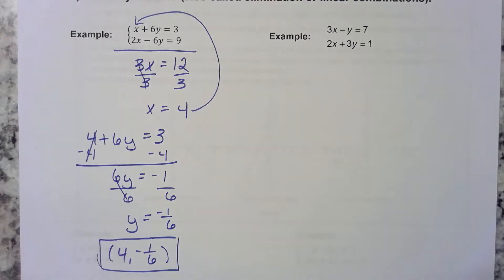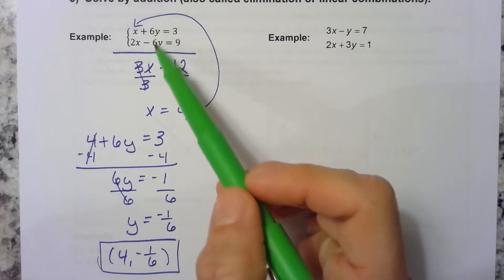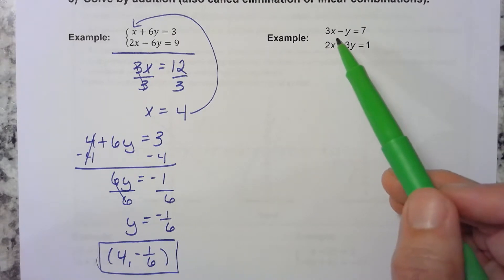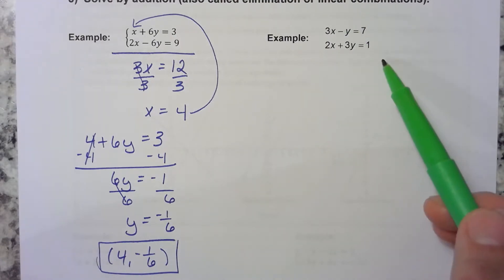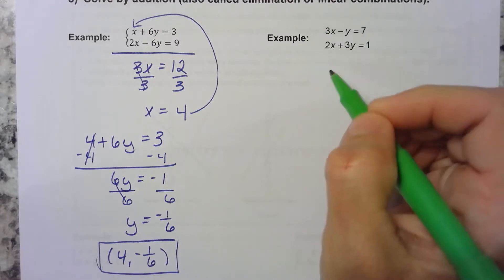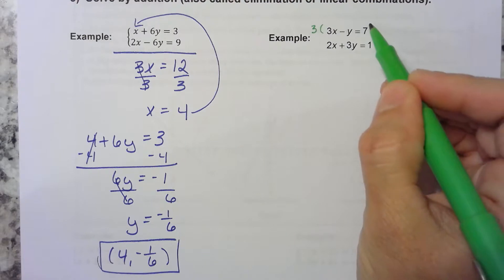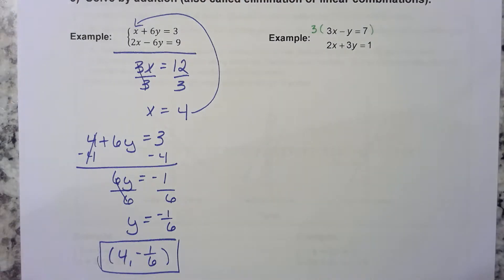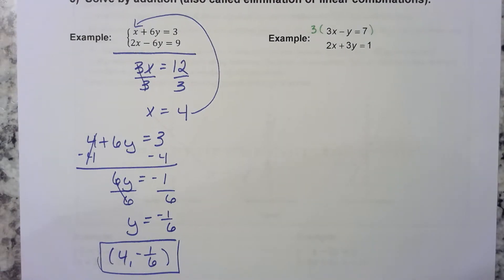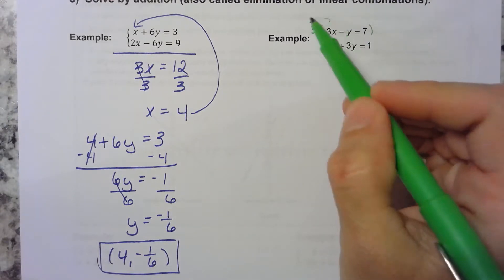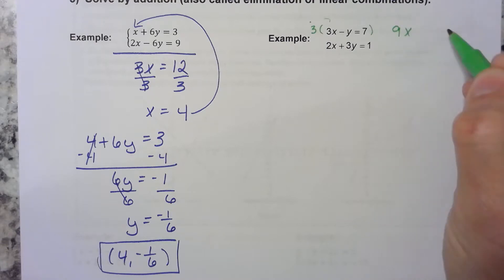So let's look at the next example. If we were to add those together, would anything nice happen? Meaning, like this one, the 6y's went away, right? Would that happen over here? We would have a 5x and a 2y and an 8. That doesn't help us at all. So in a case like that, we need to kind of make something happen for us. So what if I took this entire equation and I multiplied it by 3 on both sides? Remember, as long as you do the same thing on both sides, you're still doing legal operations, right? So we can distribute this 3. We'll end up with 9x minus 3y equals 21.